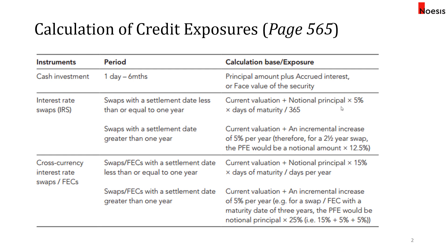For interest rate swaps with less than one year to settlement, we take the current valuation plus the notional principal times five percent times the number of days to maturity over 365. At the inception of derivatives, the current value is always zero.